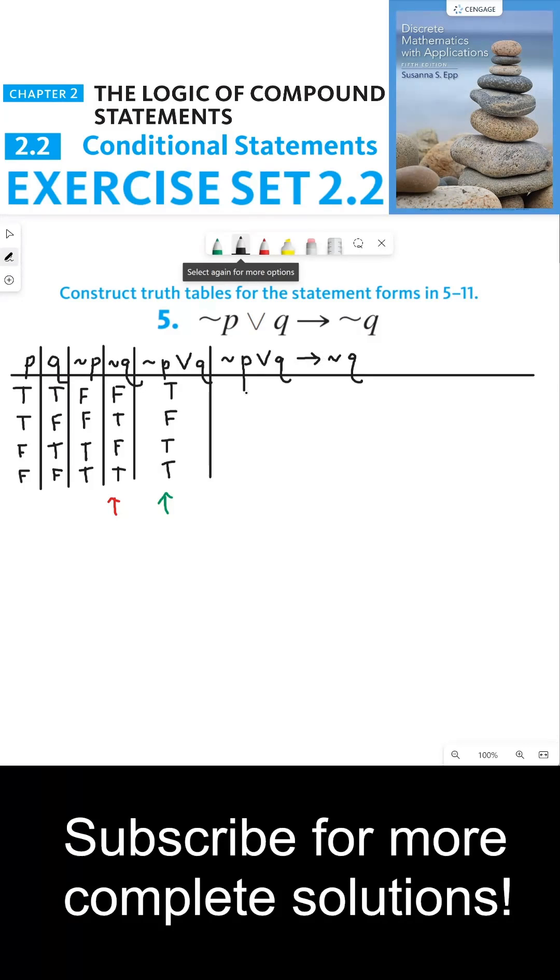In this case, for the first row, not P or Q is true and not Q is false. The hypothesis is true and the conclusion is false, which means the implication itself is false.